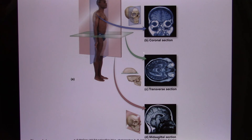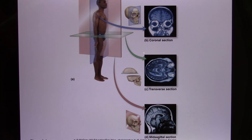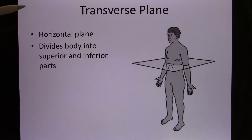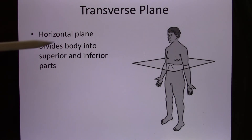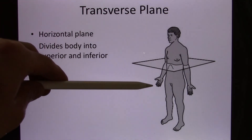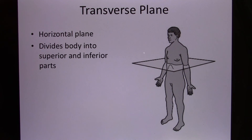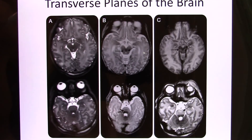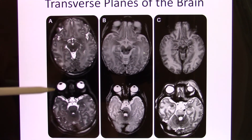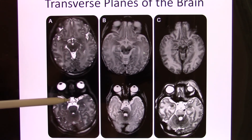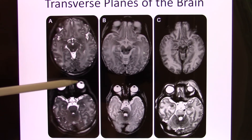The transverse plane cuts the body into superior and inferior halves — like a magician cutting a body in half. A transverse cut of the brain shows structures like the sphenoid bone at the bottom of the cranium and the two eyeballs.